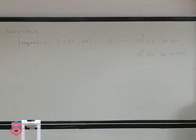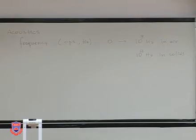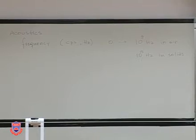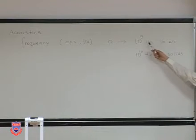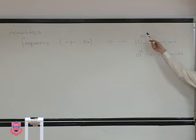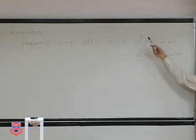One of the things you may or may not think about is the frequency. Frequencies, cycle per second or hertz, can be from 0 to 10 to the 9 hertz in air and 10 to the 13 hertz in solids. You might say these are pretty high frequencies, as you can see, 10 to the 9, 10 to the 13. Do you know why it is not higher than that in an air medium? Why isn't it 10 to the 10 or 10 to the 11?